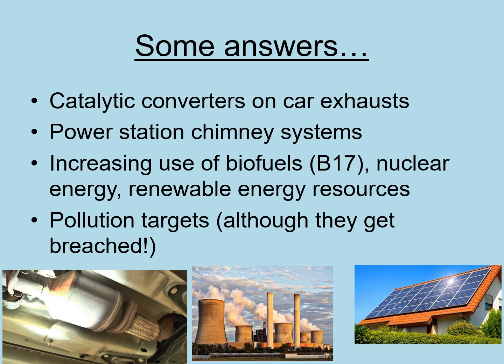Here are some answers you might have got. Firstly, catalytic converters on car exhausts — the gas comes from the engine through a pipe to the catalytic converter, which has a honeycomb structure of ceramics inside. This provides a surface for reactions so that dangerous substances coming out of the engine can be converted into less dangerous things. Power station chimney systems work similarly — a chemical process removes some of the more dangerous gases. We can also increase the use of biofuels, which you learned about in B17, and using nuclear energy is less polluting than fossil fuel energy.